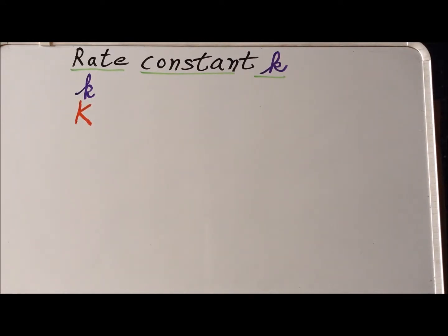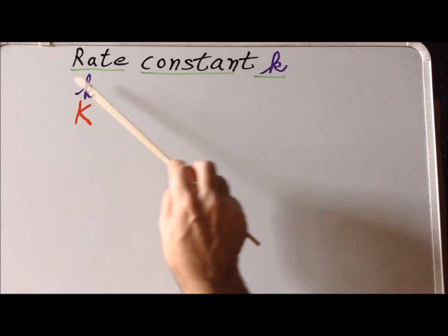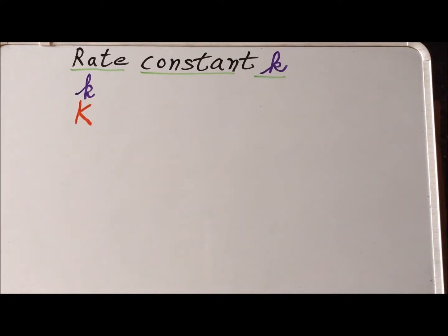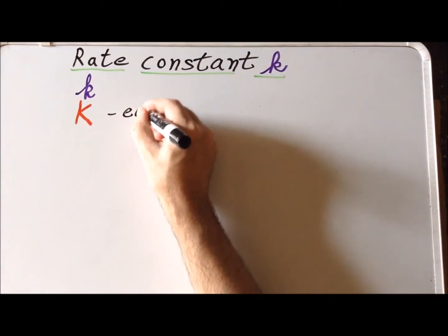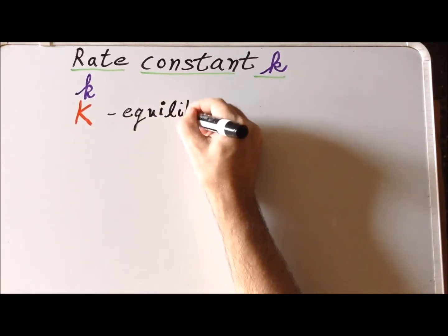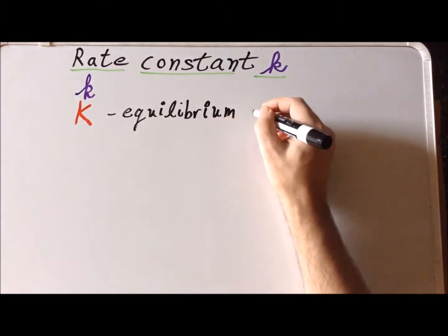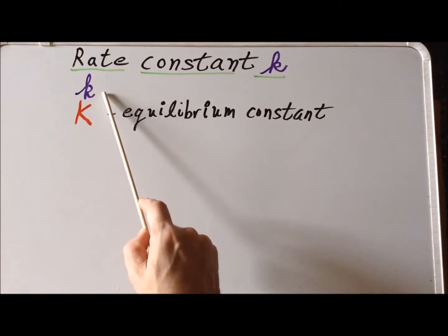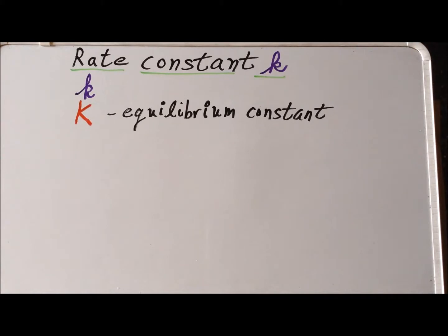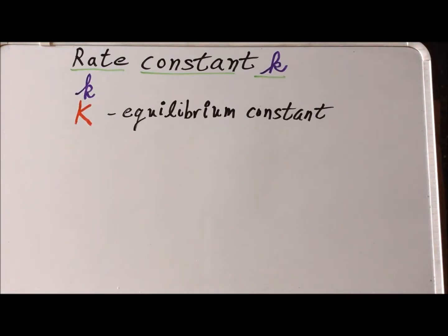It is important that we distinguish between the rate constant, for which we use a small or lowercase Roman k, and the equilibrium constant, for which we use a big or capital K. The equilibrium constant by definition is unitless — no matter the circumstance, no matter the reaction, the equilibrium constant big K will be unitless.